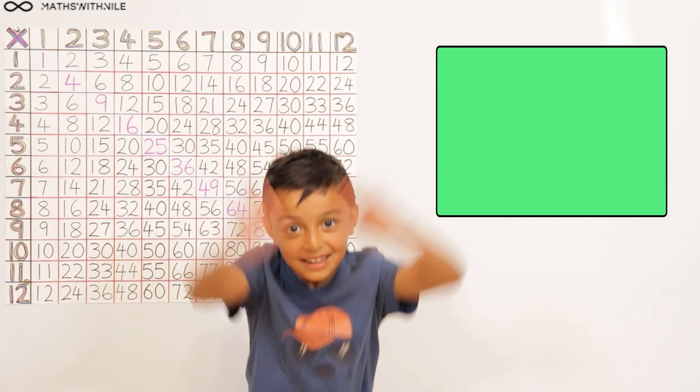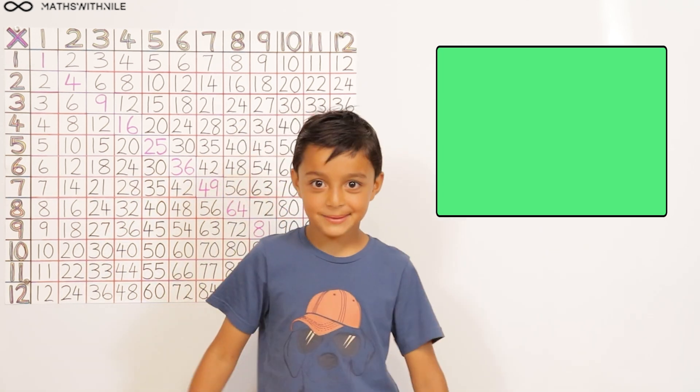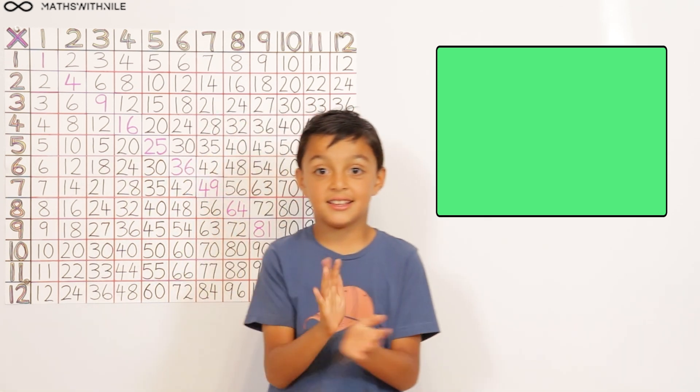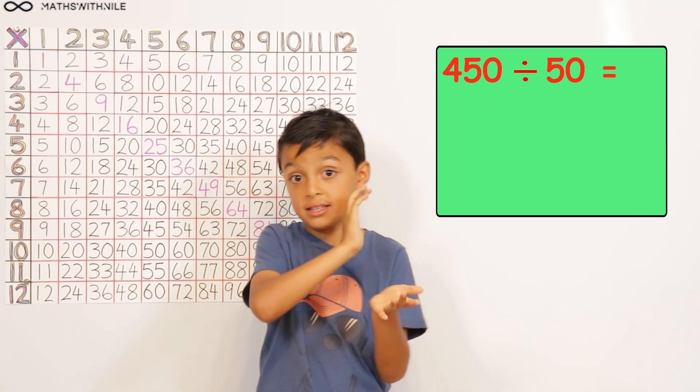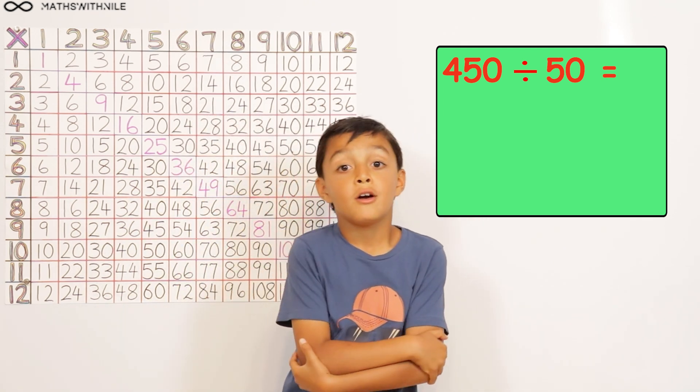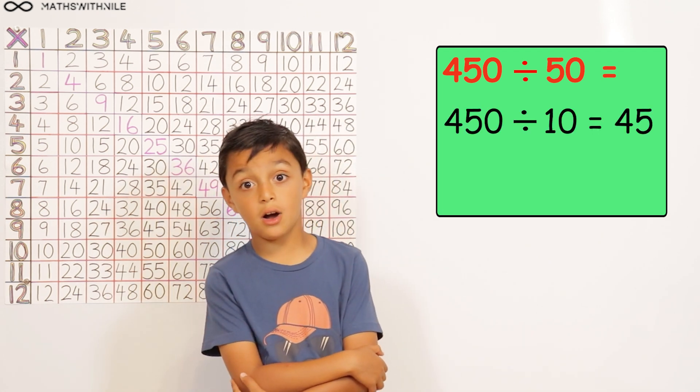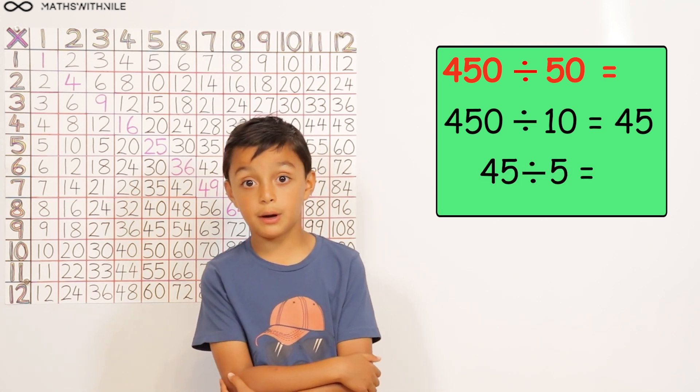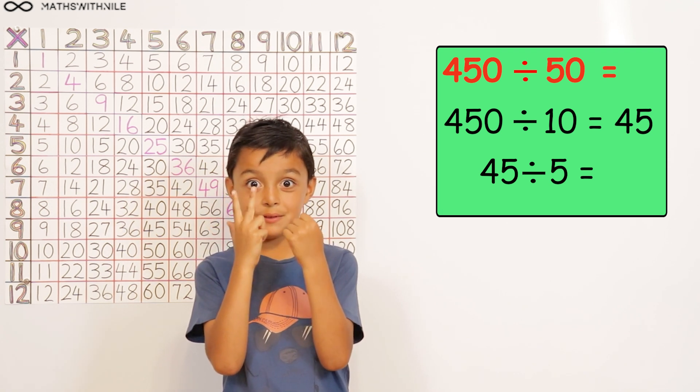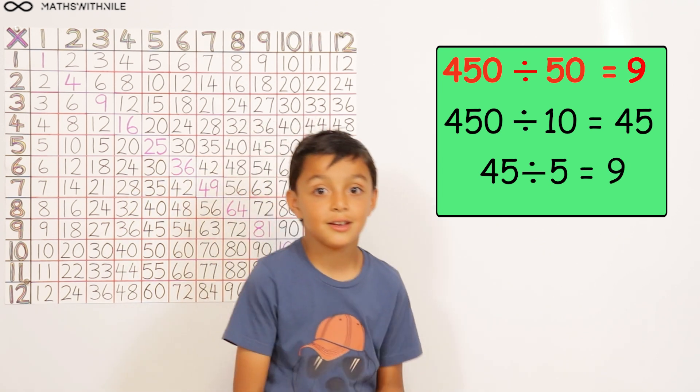Okay, brilliant. And then two more. What is 450 divided by 50? So, 450 divided by 10 is 45. And then 45 divided by 5 equals 5, 10, 15, 20, 25, 30, 35, 40, 45. 9. 9. Very good, Niall.